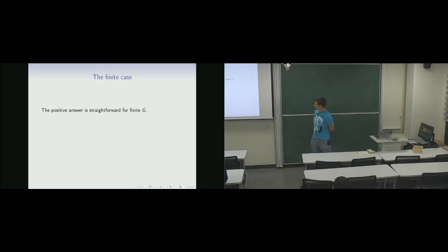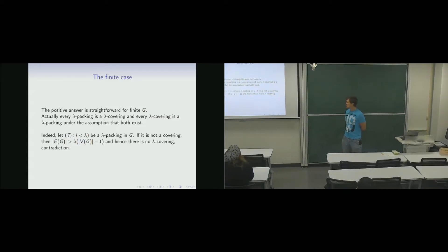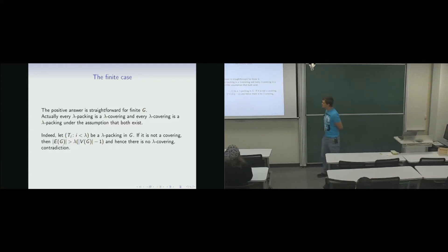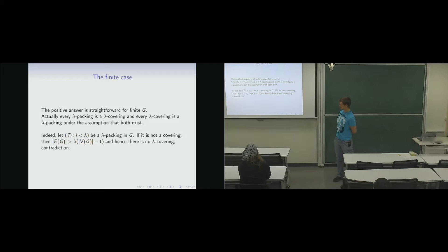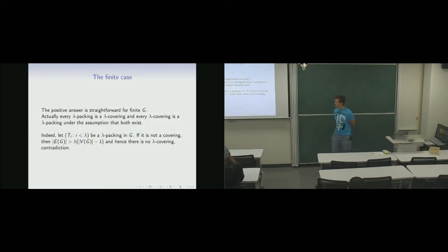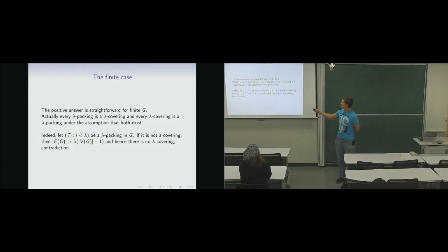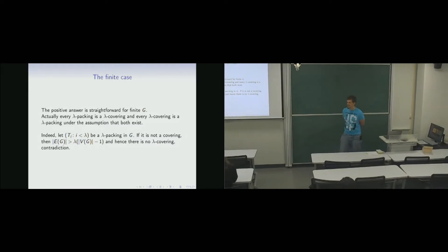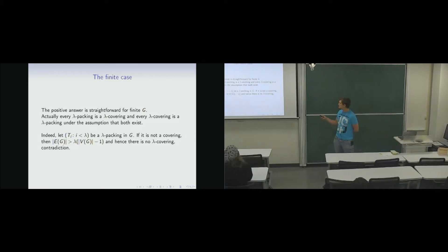If the graph is finite then the answer is yes and it's straightforward, because if we take a lambda packing and it is not covering, then the graph must have more edges than lambda times the size of the vertex set minus one, since lambda many pairwise edge disjoint spanning trees cover that many edges. If it does not cover all of them there are more edges, but then we have no chance to cover all the edges with lambda many spanning trees. So in the finite case the problem is trivial and it becomes interesting in the infinite case.